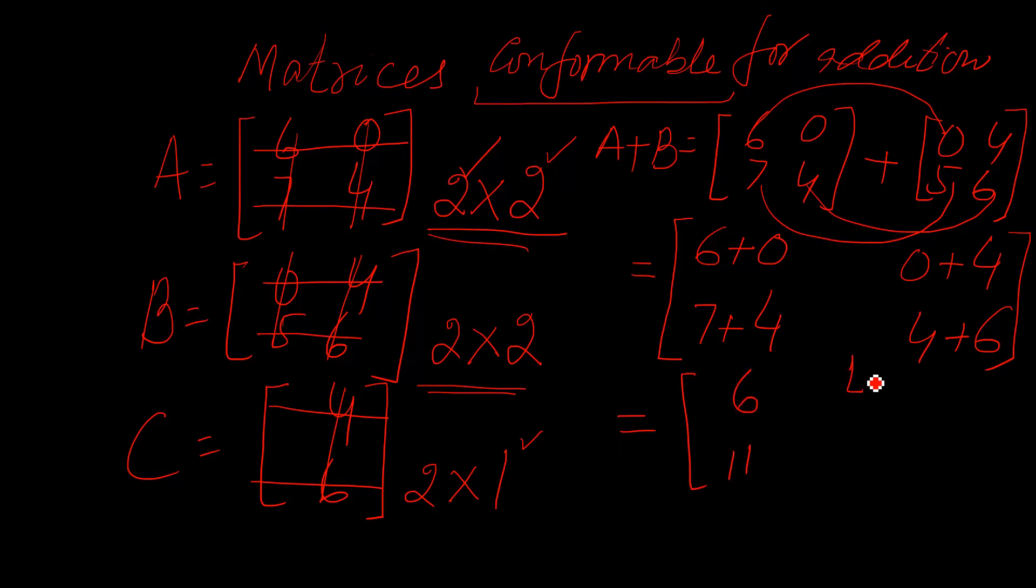So it is 6 plus 0, 7 plus 4, 0 plus 5, 4 plus 6, which equals 6, 0, 7, 4, 4, 10. So see if number of rows and number of columns are equal, yes you can add it. These matrices are conformable.